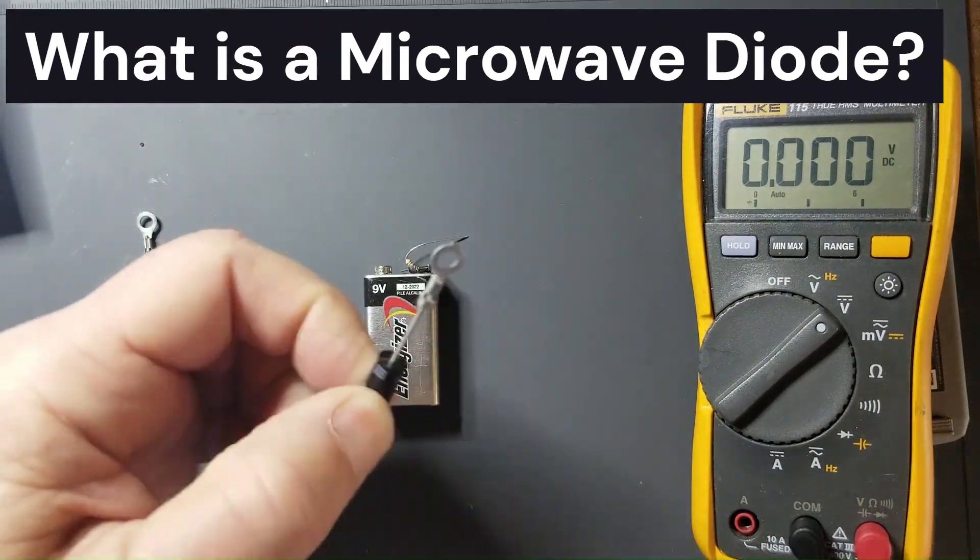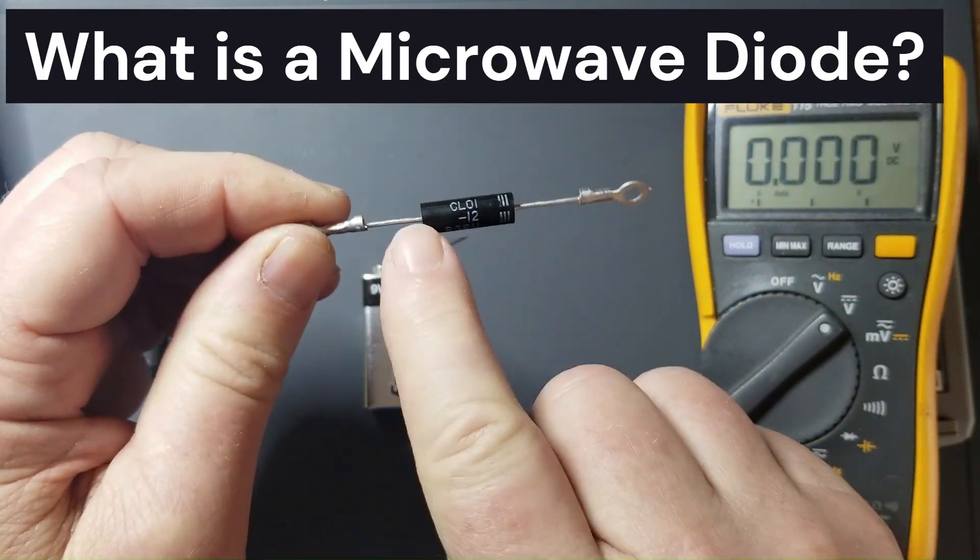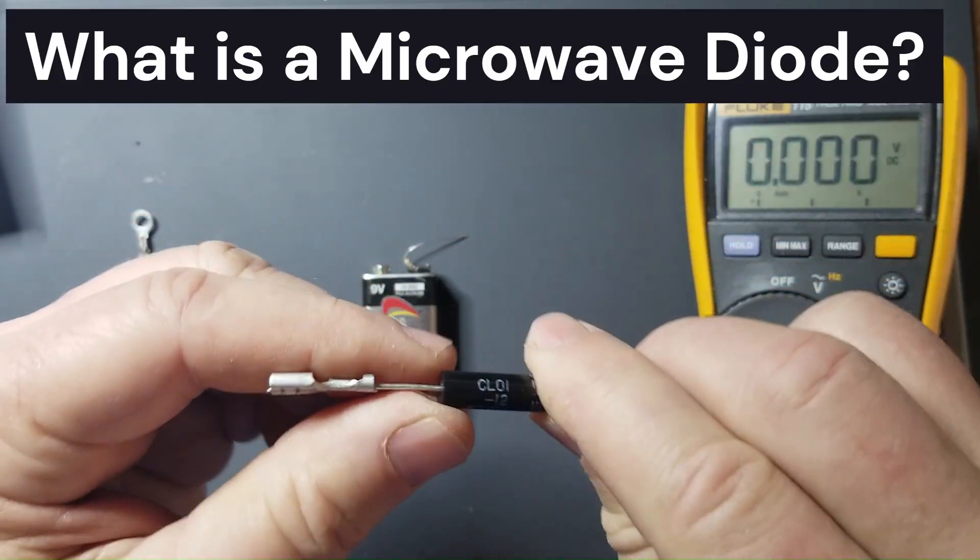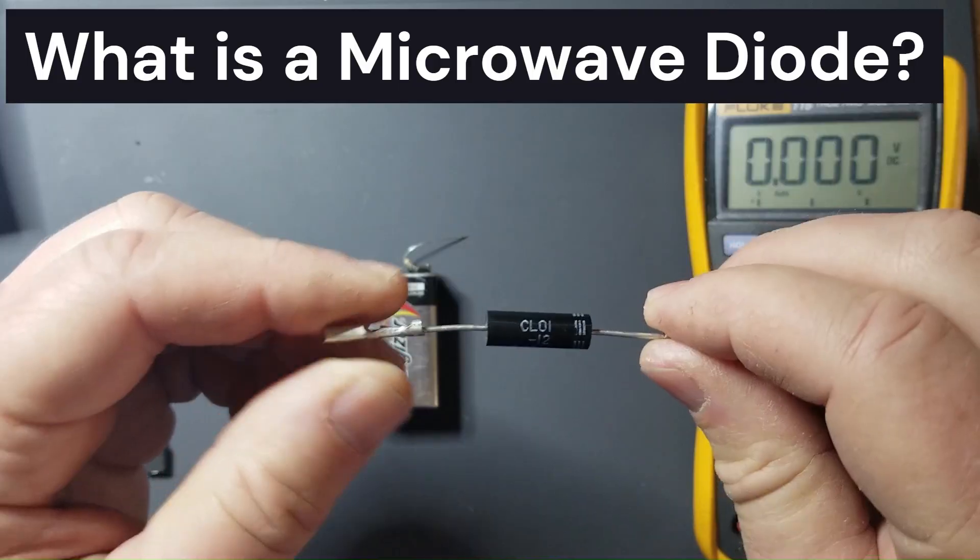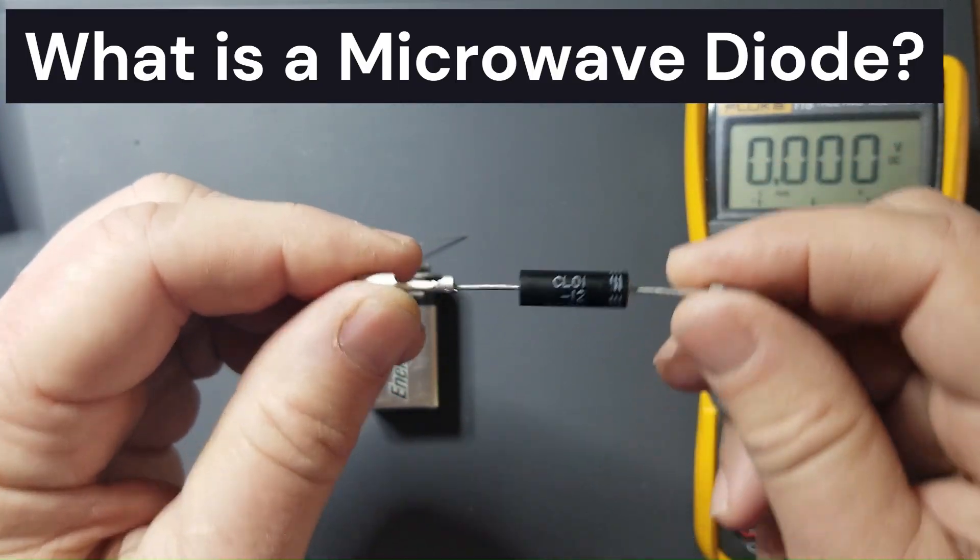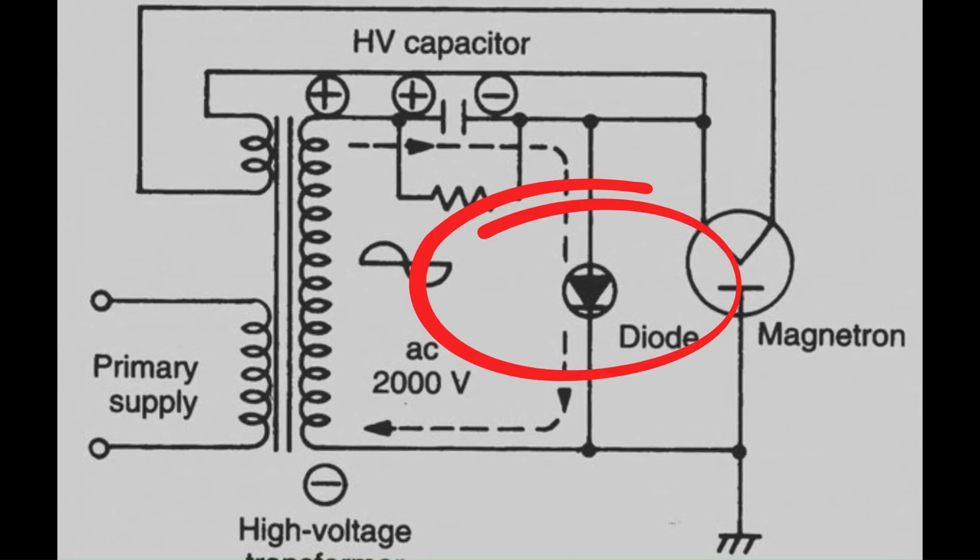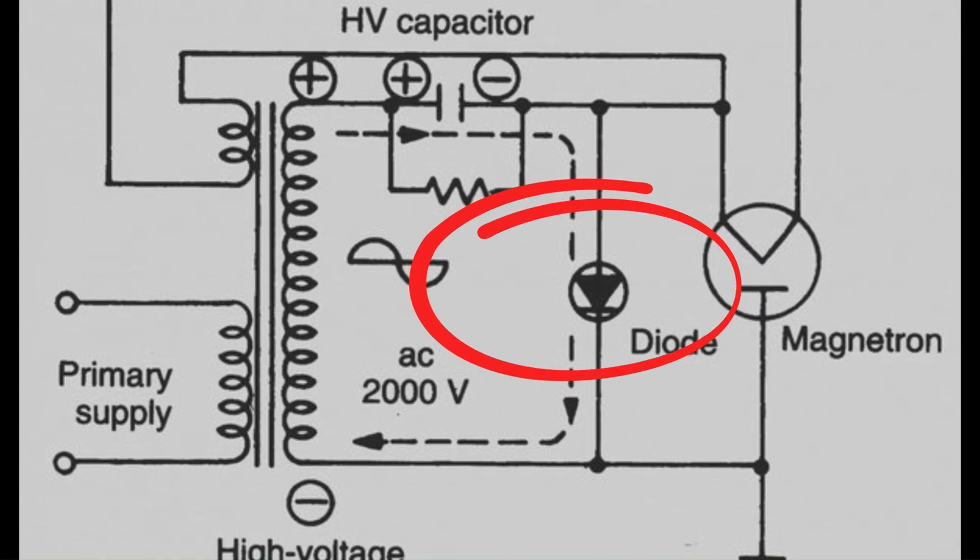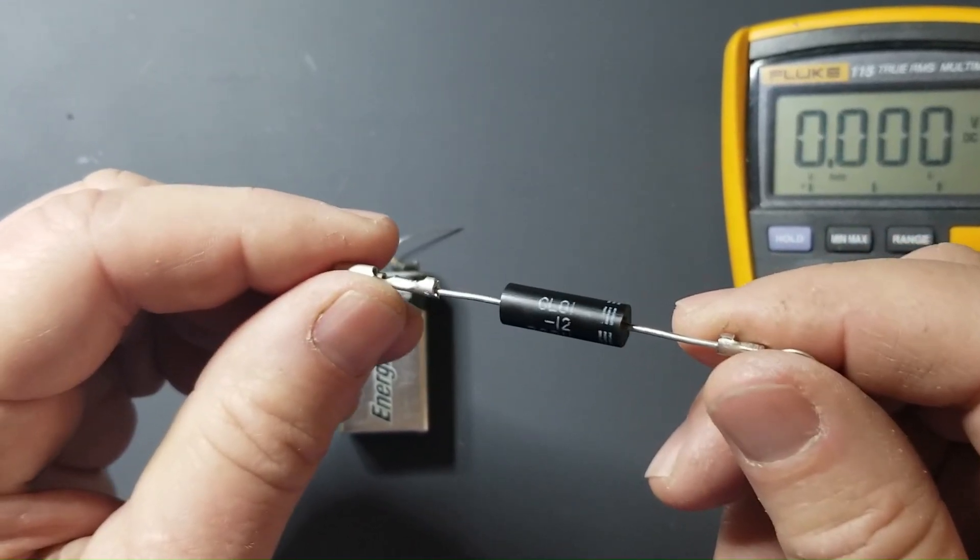So how do microwave diodes work? They're actually constructed of many high voltage diodes stacked on top of each other in series to achieve a very high reverse breakdown voltage as is necessary for their intended purpose which is to reside in a voltage doubler in a microwave oven. This requires that they are able to handle a reverse voltage drop of up to 12,000 volts.